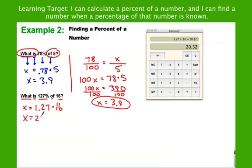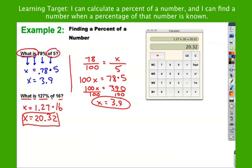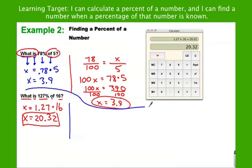So 1.27 times 16, 20.32. Now think about it. Does that make sense? My whole thing is 16, but I'm going more than 100% of that. So therefore, yes, I would expect to get a number that's higher than the number I started with. So, next, proportion style. And guys, when you do these problems, you do one or the other of these. You do not do both. Don't do both sets of work. You pick one.